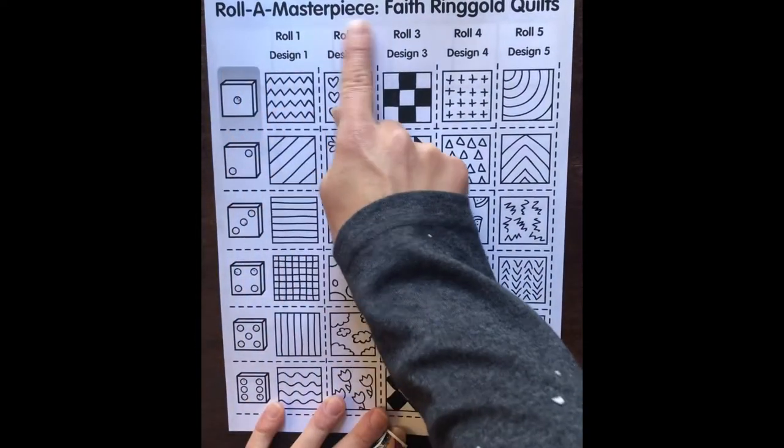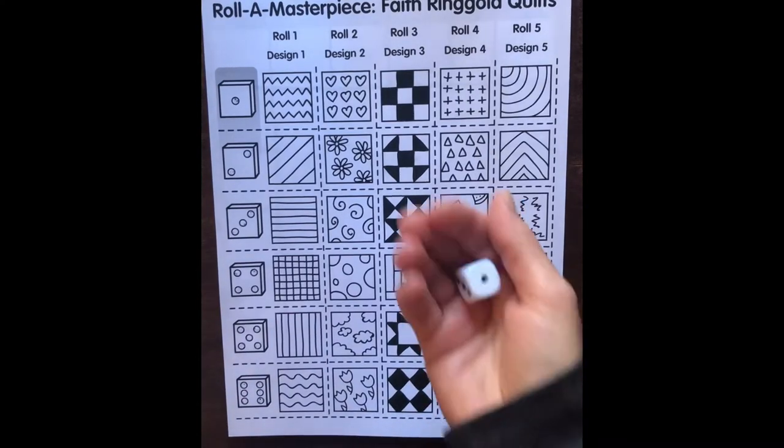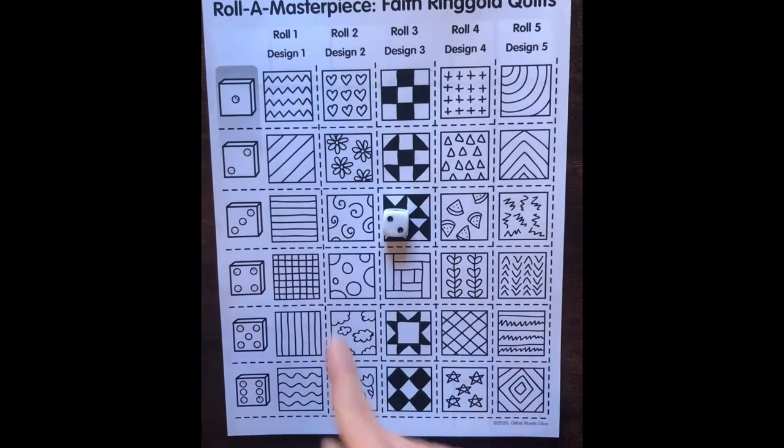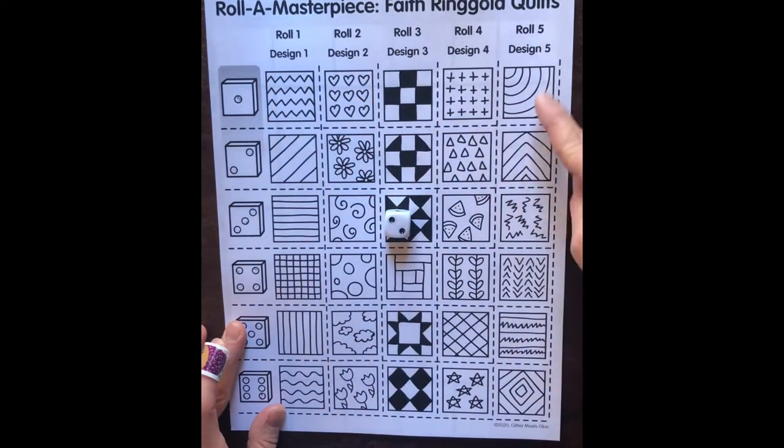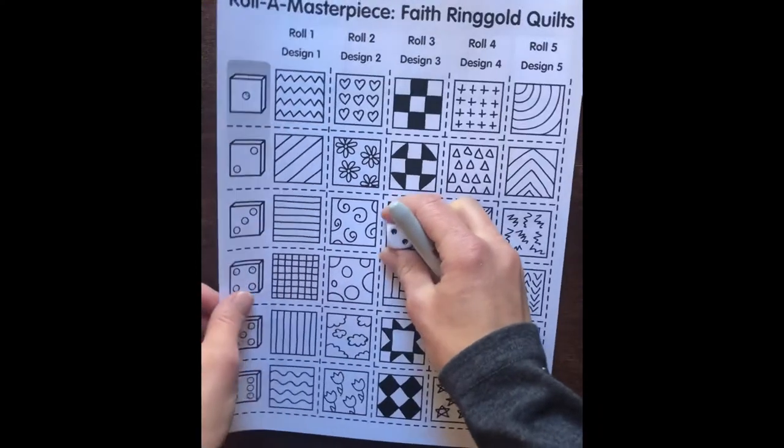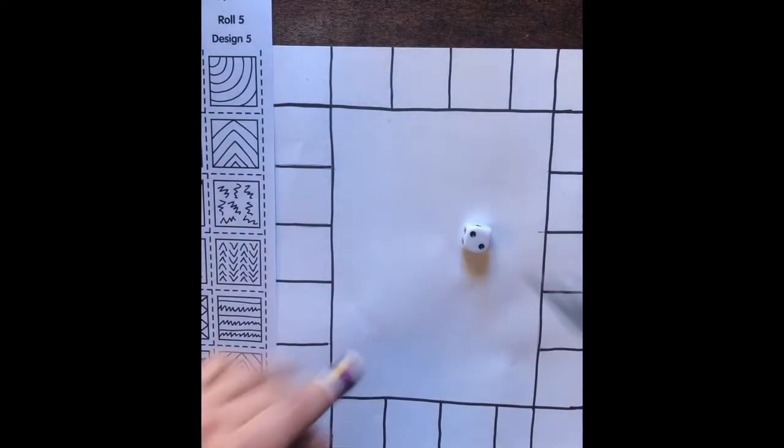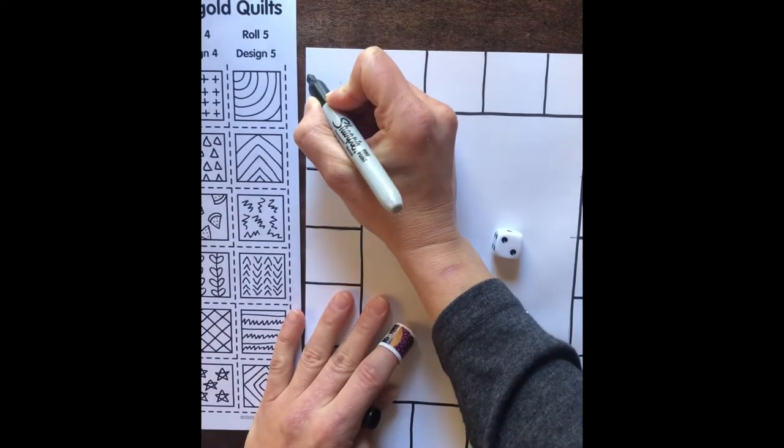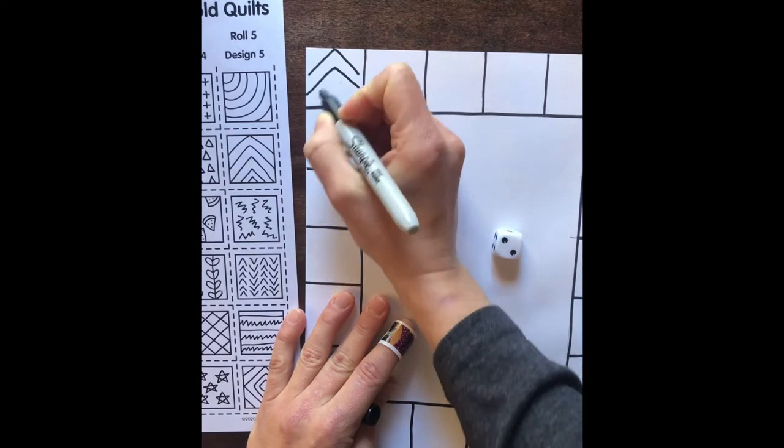I am going to get my Roll a Masterpiece Faith Ringgold quilt worksheet and I'm going to take my dice and roll. I got a two. So when I look at the two, I can pick design one, two, three, four, or five and draw that. You can draw it right in Sharpie or go ahead and color it. I'm going to pick a square to do that and I'm going to work on this one right here, design five. Let's see how many different designs we can get on our quilt today.